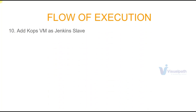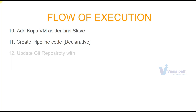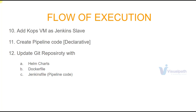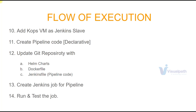We're going to add our KOPS EC2 instance as a Jenkins slave. Then we'll create pipeline code — a declarative pipeline covering the build, test, Docker build process, and Helm chart deployment process. We'll update our Git repository with the Helm charts, Dockerfile, and Jenkinsfile. Once everything is ready, we'll create a Jenkins job for the pipeline, then run and test it. So let's just dive in!